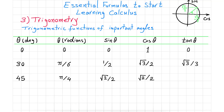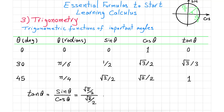Tangent of 45 degrees is 1, because tangent of theta equals sine of theta over cosine of theta. Here that's √2/2 divided by √2/2, which equals 1.